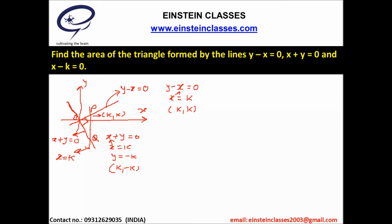This is triangle OPQ, which is a right angle triangle. Using the distance formula we can find OP and OQ, and then the area of the triangle equals half times OP times OQ.